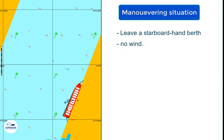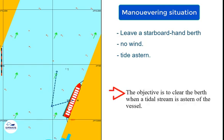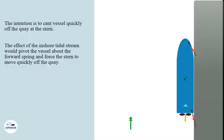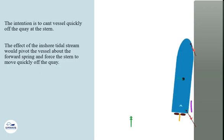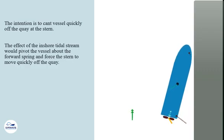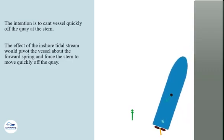This simulation run demonstrates how to handle a ship unberthing a starboard hand berth in a condition of calm wind with tide astern. The objective is to clear the berth when a tidal stream is astern of the vessel. The intention is to cant the vessel quickly off the quay at the stern. The effect of the inshore tidal stream would pivot the vessel about the forward spring and force the stern to move off the quay.